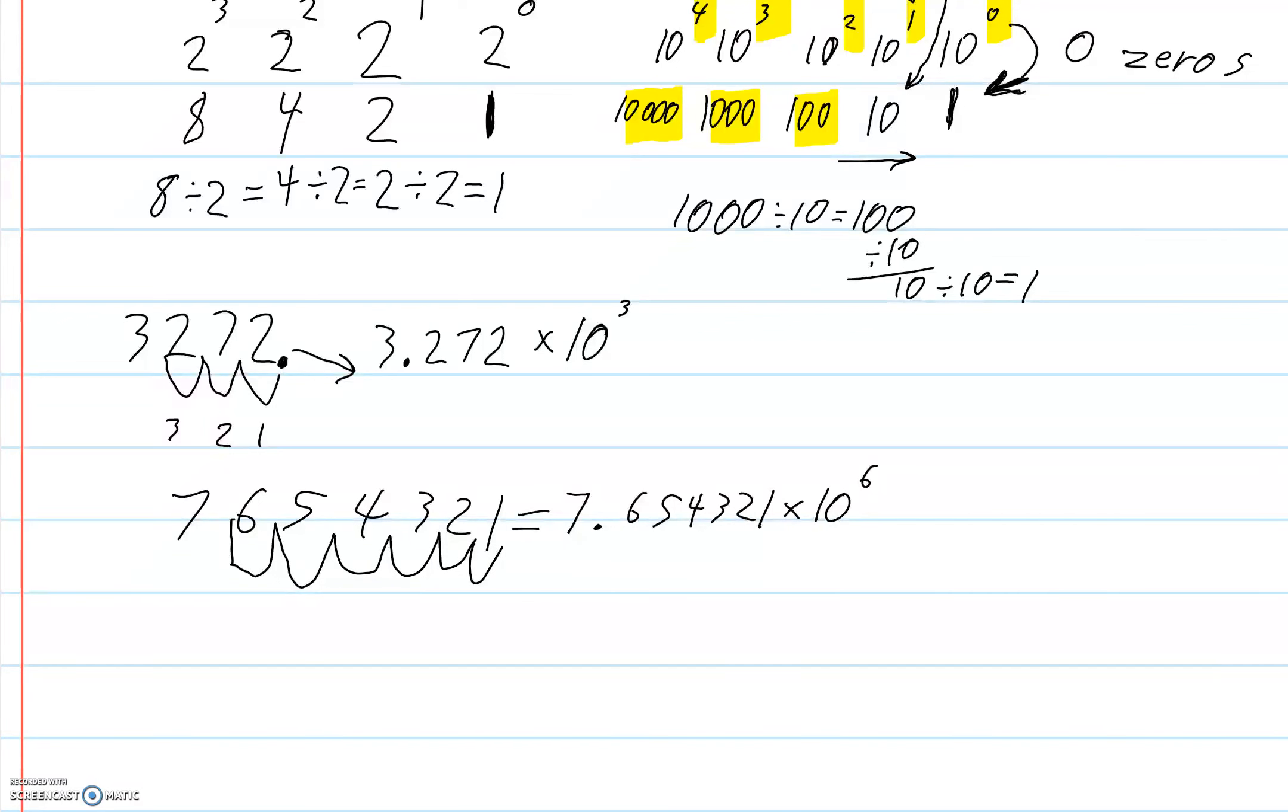Now what if we see a number that looks like this? 7, 6, 5, dot, 4, 3, 2, 1. Then our first part is going to look the same. 7, dot, 6, 5, 4, 3, 2, 1 times 10. But it's not to the 6. We have to watch carefully. There's the dot here, so we move it 1, 2 times. So it changes depending where the dot is. You have to be aware of that.